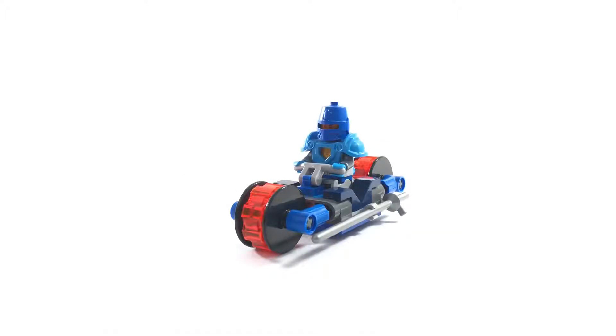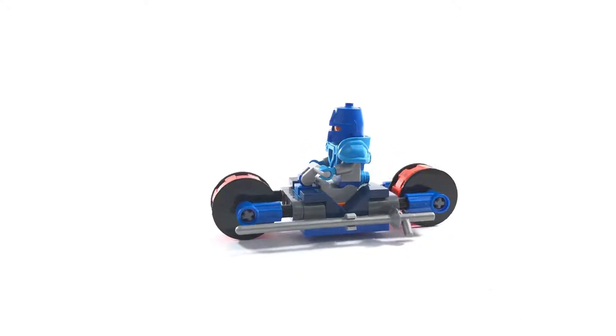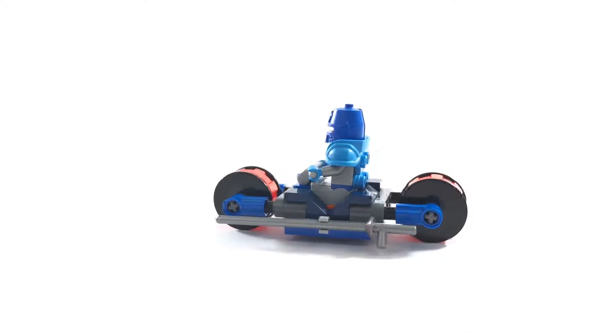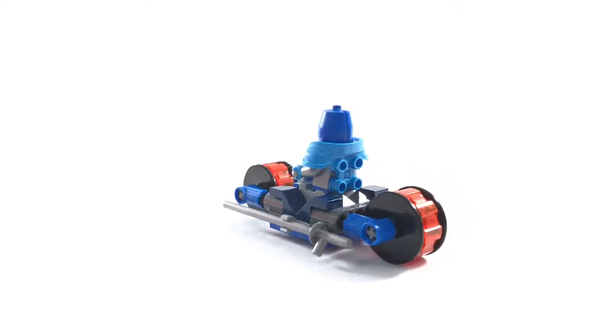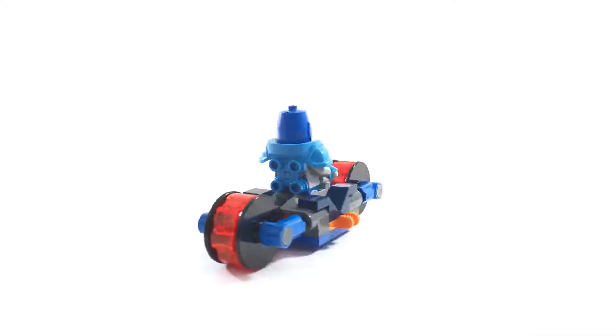Welcome back, this is the LEGO Nexo Knights set 30376, Knight and Rider. It includes 42 pieces and is a 2018 polybag featuring Nexo Knights season 2. It includes one minifigure which we'll take a look at, but first I'll give you a 360 of the bike.